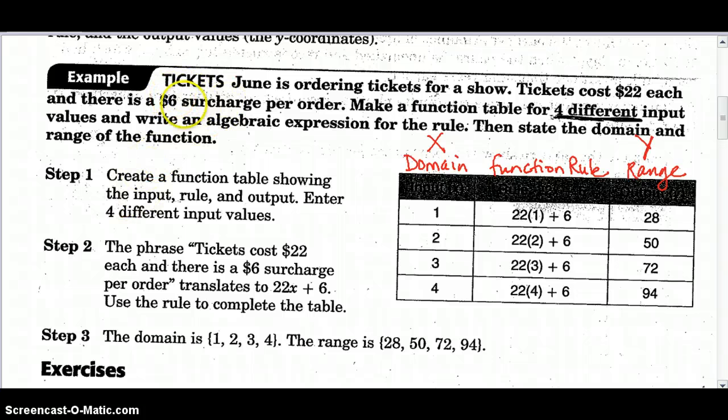So our instructions here, let's read our problem. June is ordering tickets for a show. The tickets are $22 each, and there is a $6 surcharge per order. Not per ticket, but per order. Make a function table for four different input values. Now I've underlined four different. Any four will do if it just says four different.